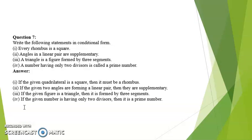Question number 7: write the following statements in conditional form. First one — every rhombus is a square. Its conditional form would be: if the given quadrilateral is a square then it must be a rhombus.